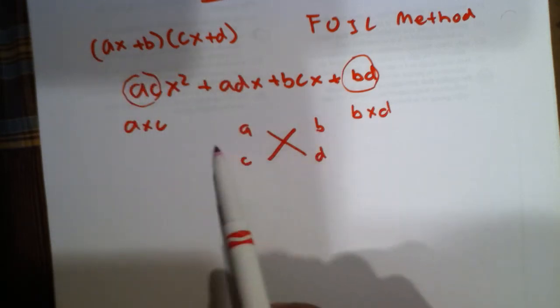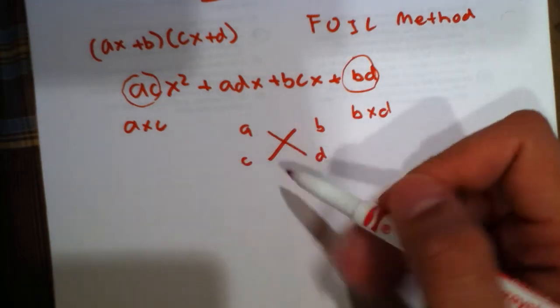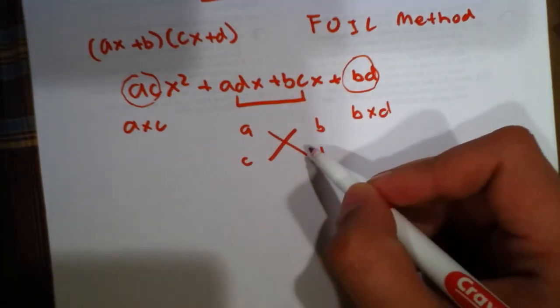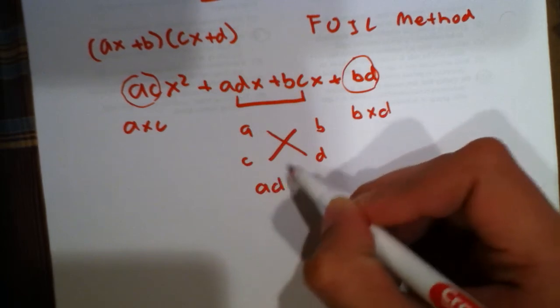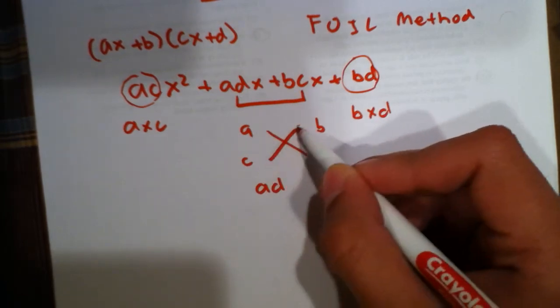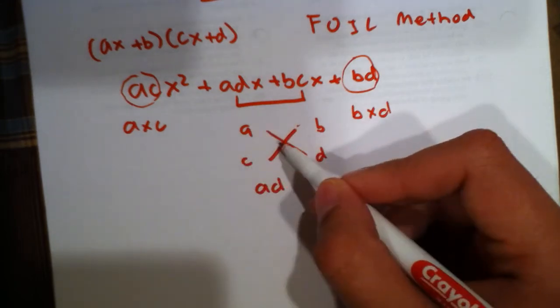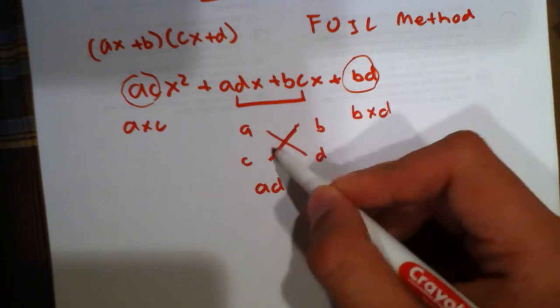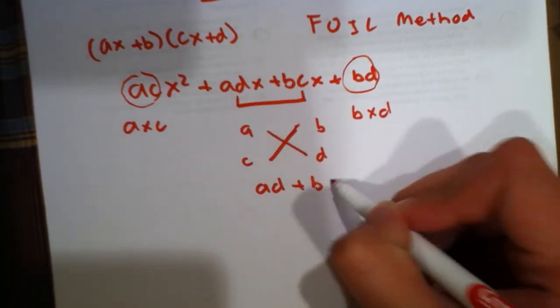You will read it across and put parentheses around these two. To get, however, this middle term, to achieve this middle term, what you do is you multiply across here, ad, and you add the product of these two of the crosses over here. So, a times d plus b times c.